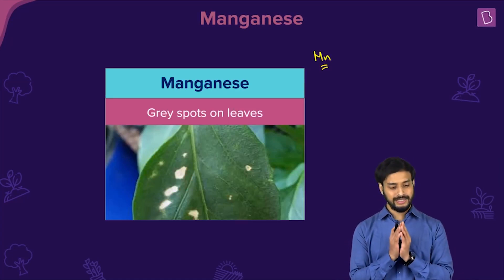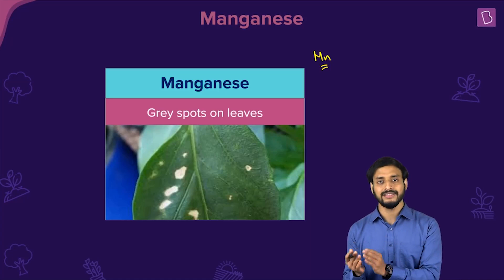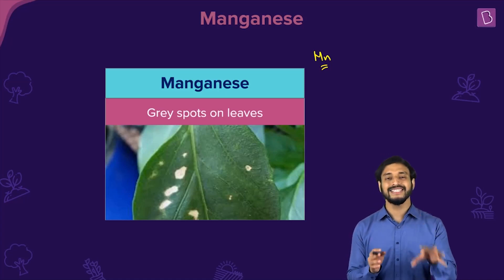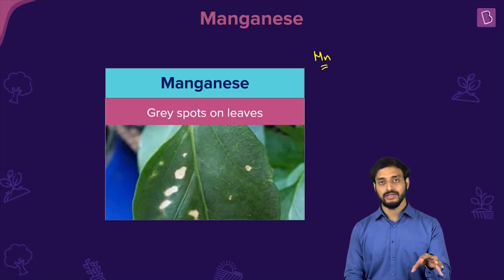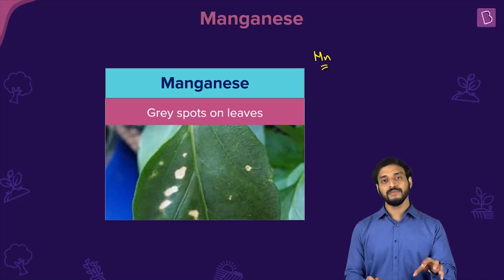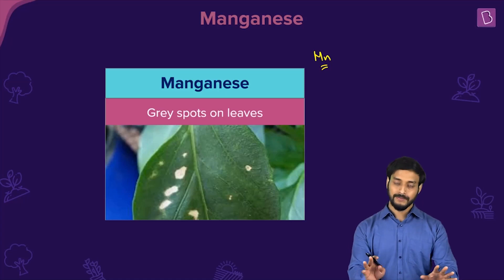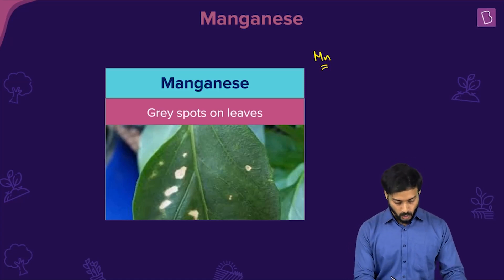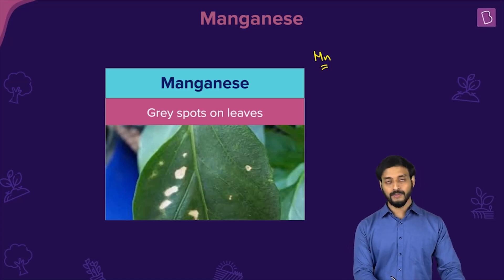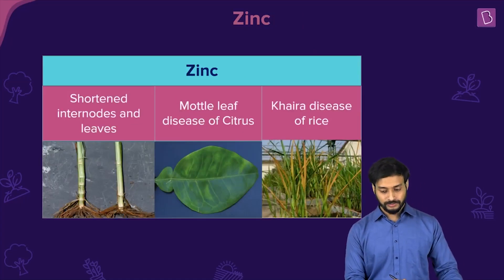Manganese deficiency causes gray spots on the leaves. Exam questions are frequently based on this symptom, so focus on it.